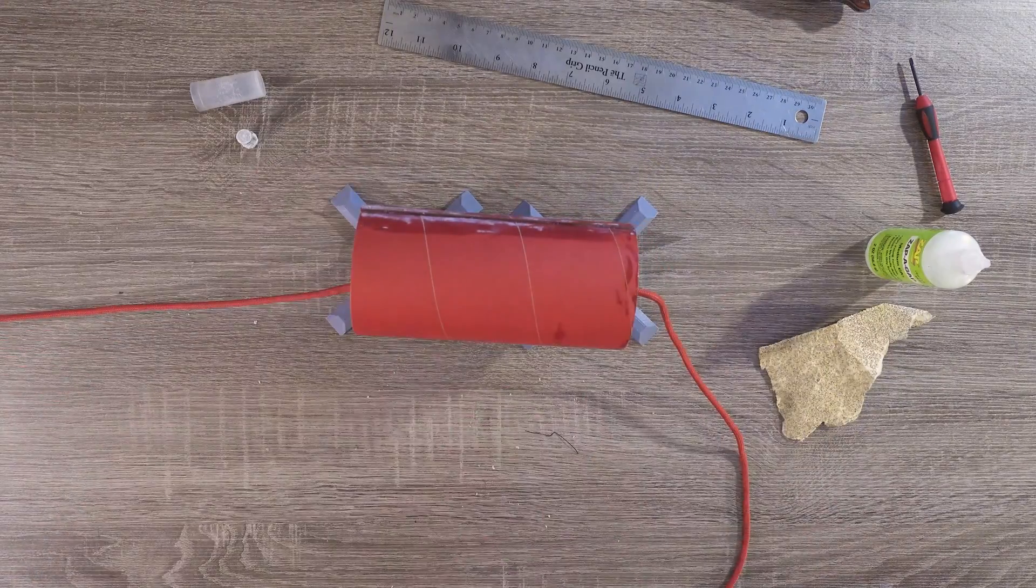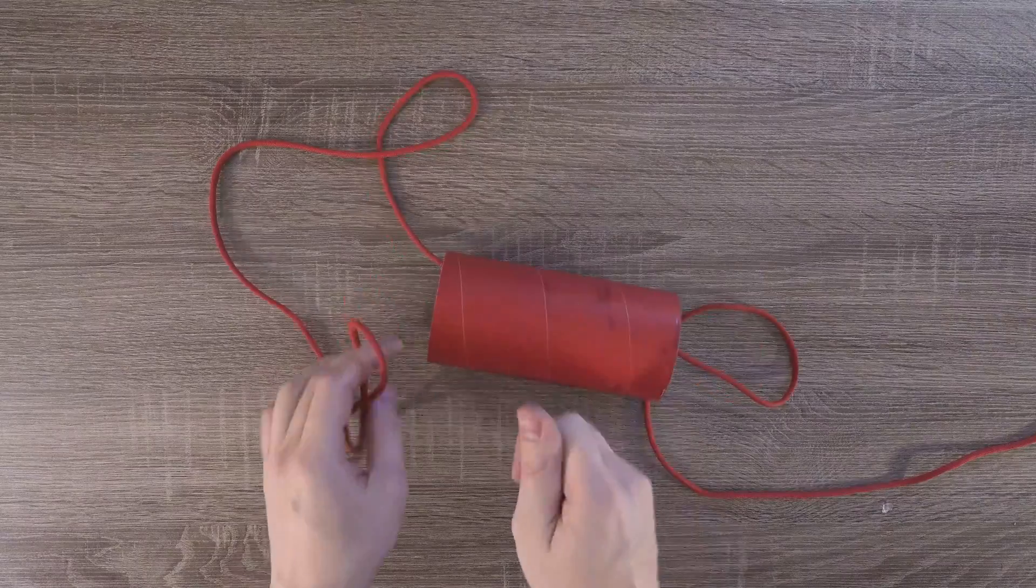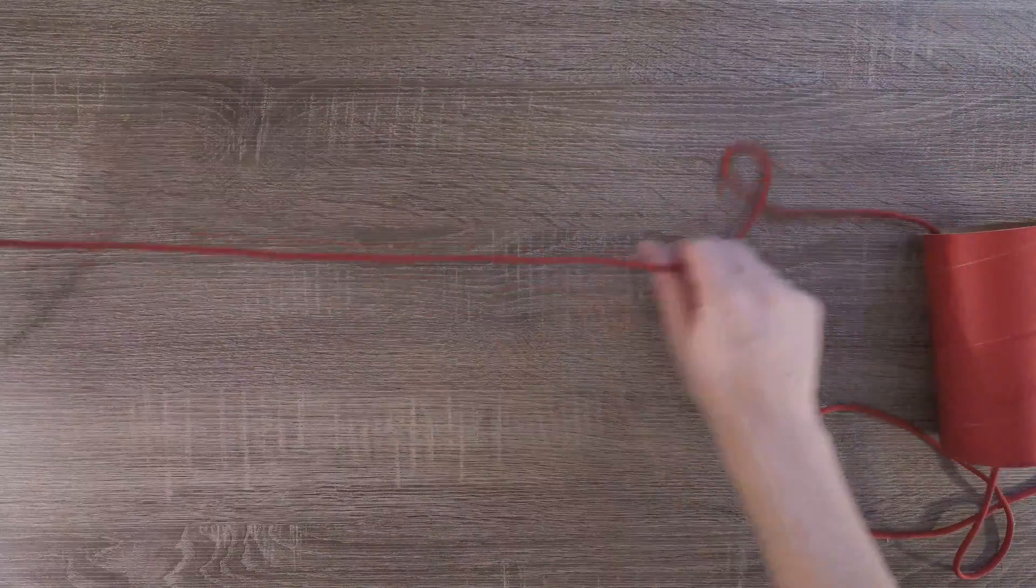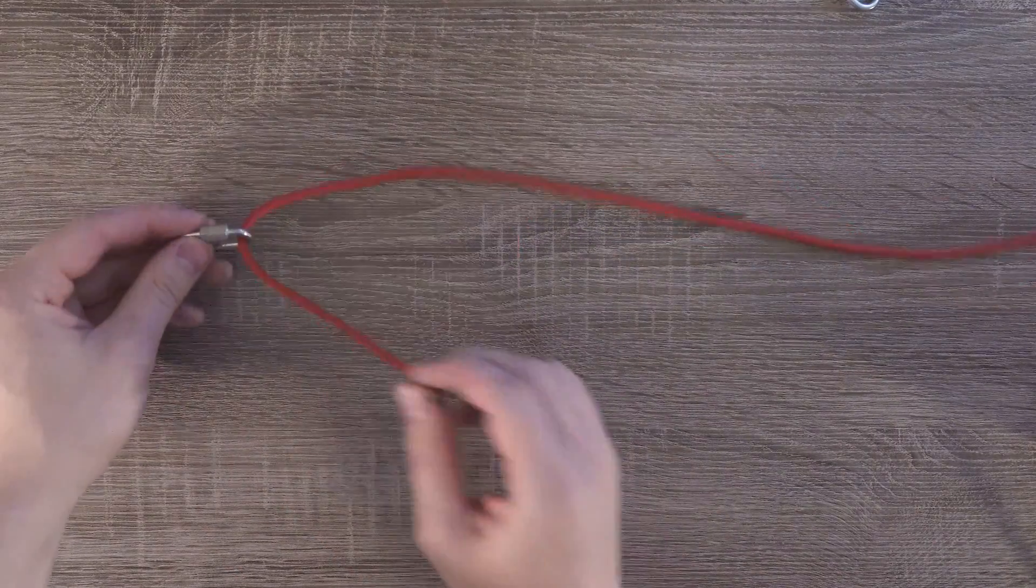After it's dry, we need to attach two quicklinks, one to each end of the shock cord. We'll tie these together using something called a Duncan or Uni-knot. Here's how it works. First, thread a decent amount of shock cord through the first quicklink.